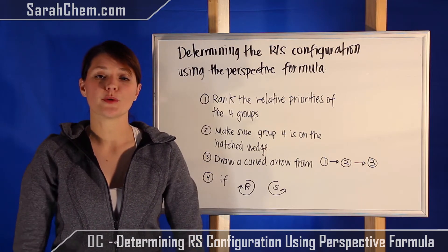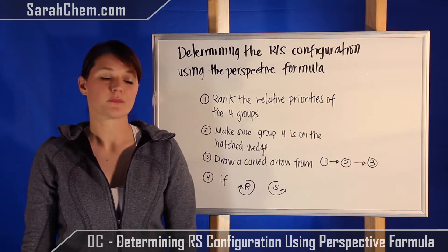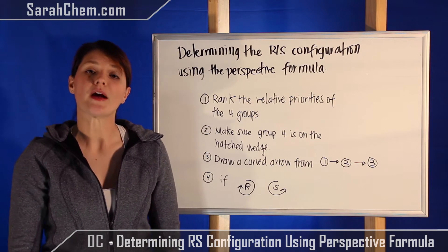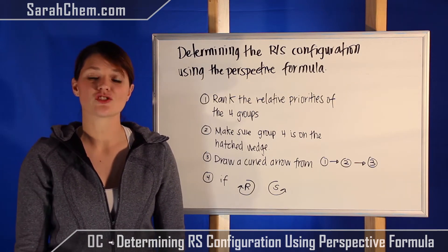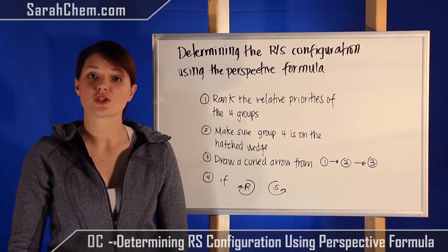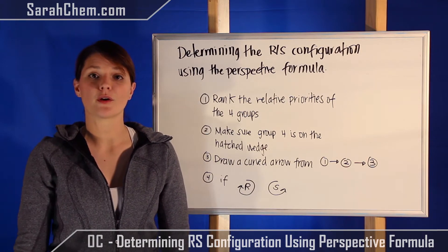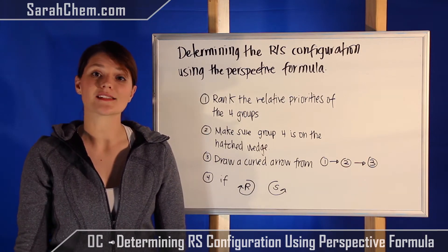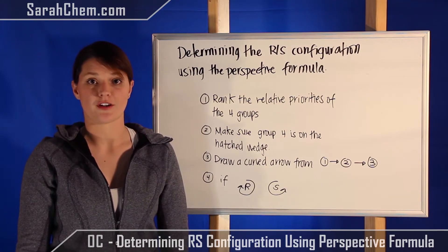So the first thing I want to do is lay out the general guidelines. The first thing you want to do is rank the relative priorities of all of the groups attached to your chiral carbon. There should be four groups, so you're going to rank priority one through four where one has the highest priority and four has the lowest priority.